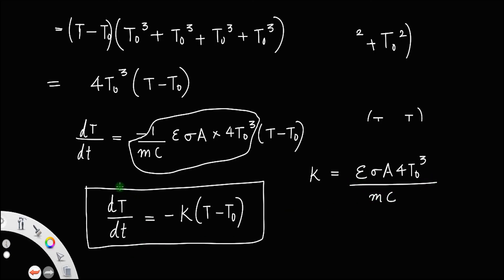So this concept — that the rate of change of temperature with respect to time is proportional to the difference in temperature between the body and its surroundings — is called Newton's law of cooling. We have just derived Newton's law from the Stefan-Boltzmann equation.